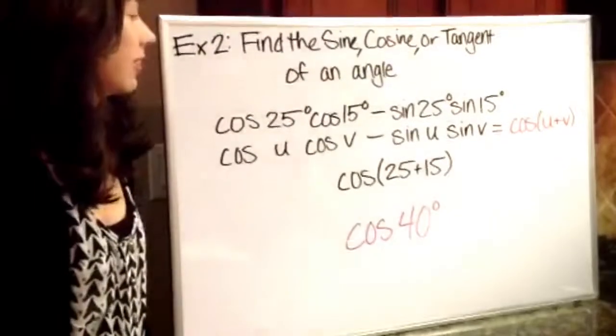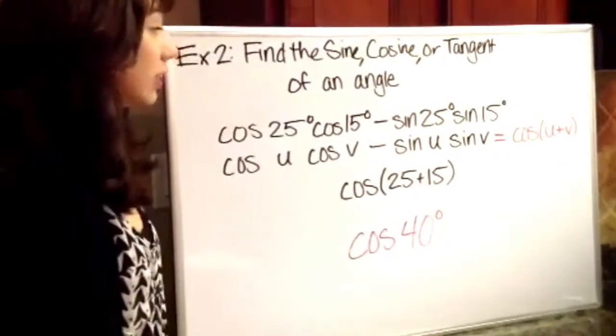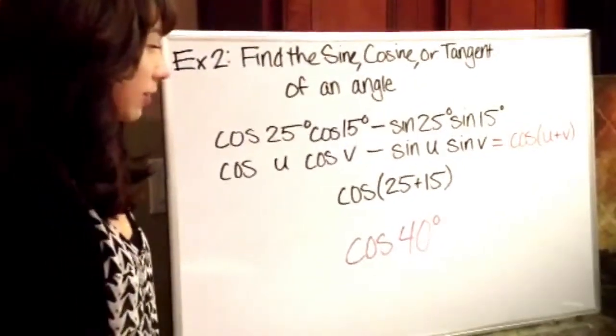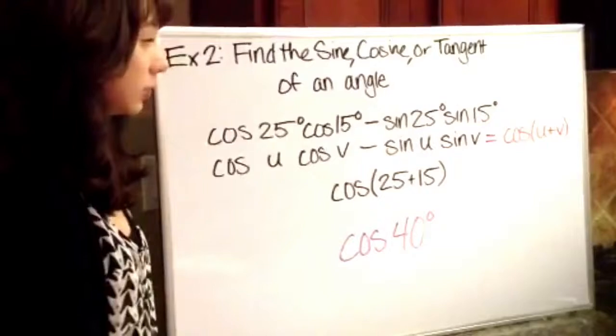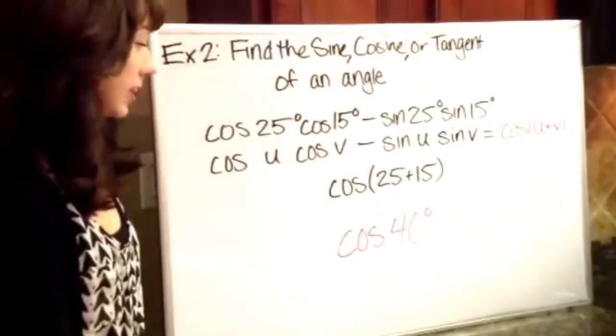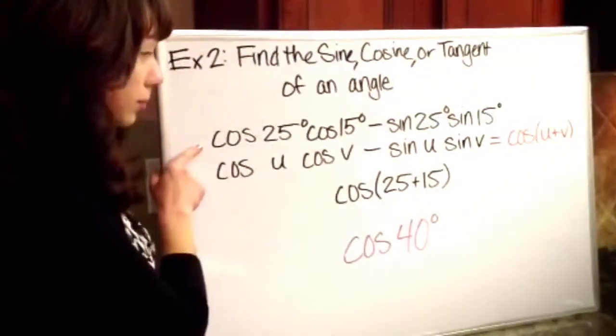For example 2, our problem is to find the sine, cosine, or tangent of the angle. So the problem it gives us is cosine 25, cosine 15 minus sine 25, sine 15. So this is what we've been doing but it's in reverse. So basically we need to find out what kind of problem this is.